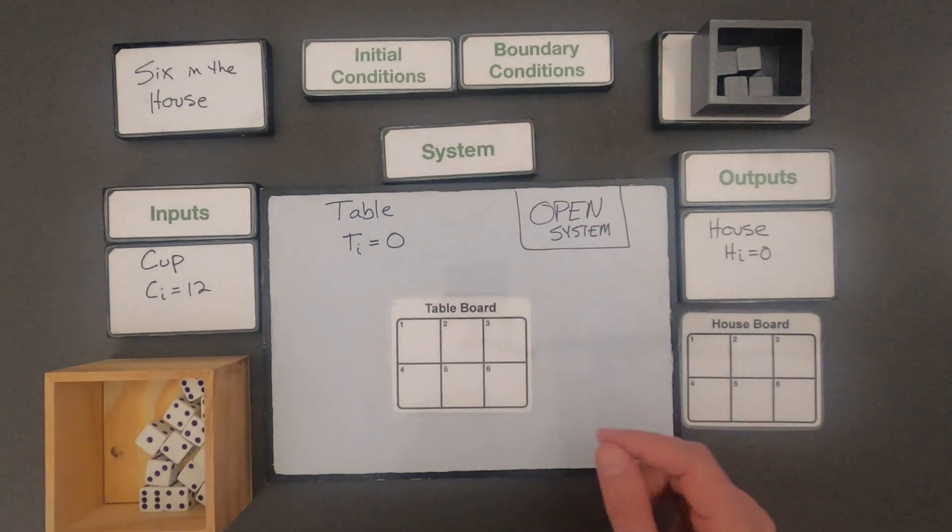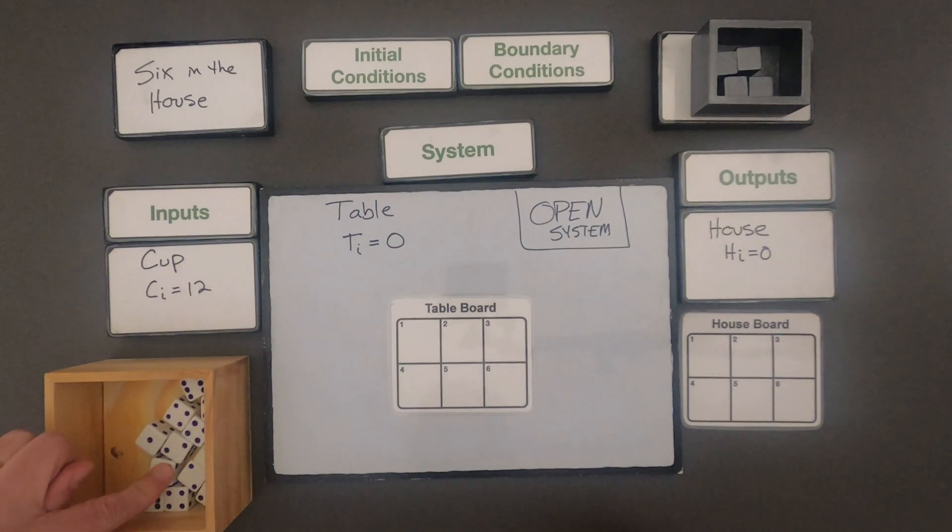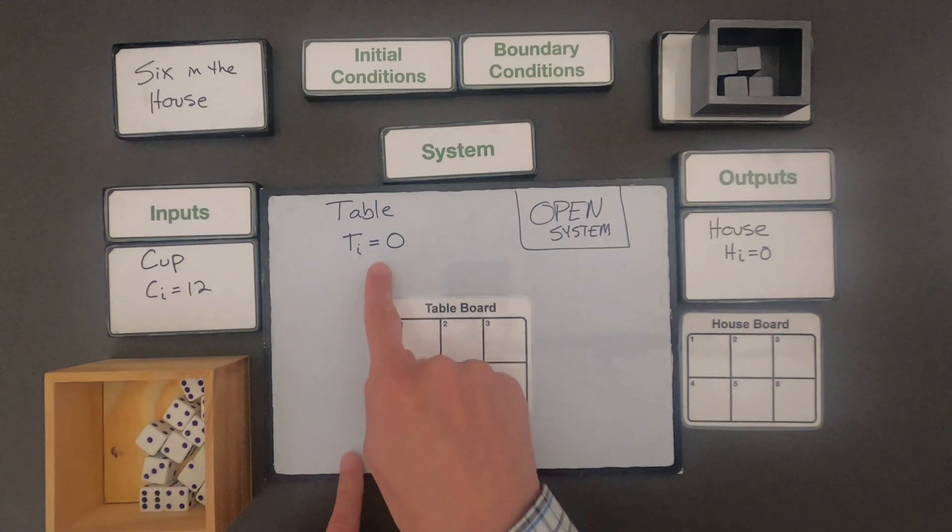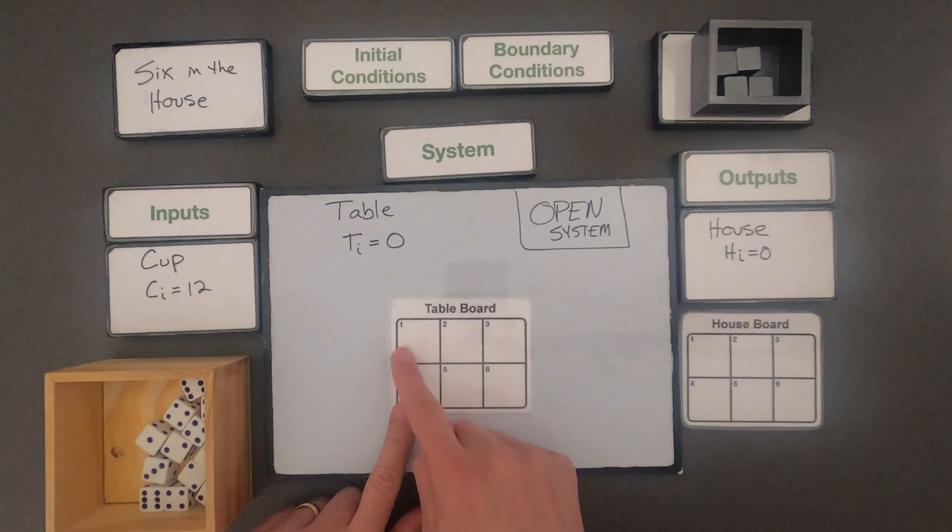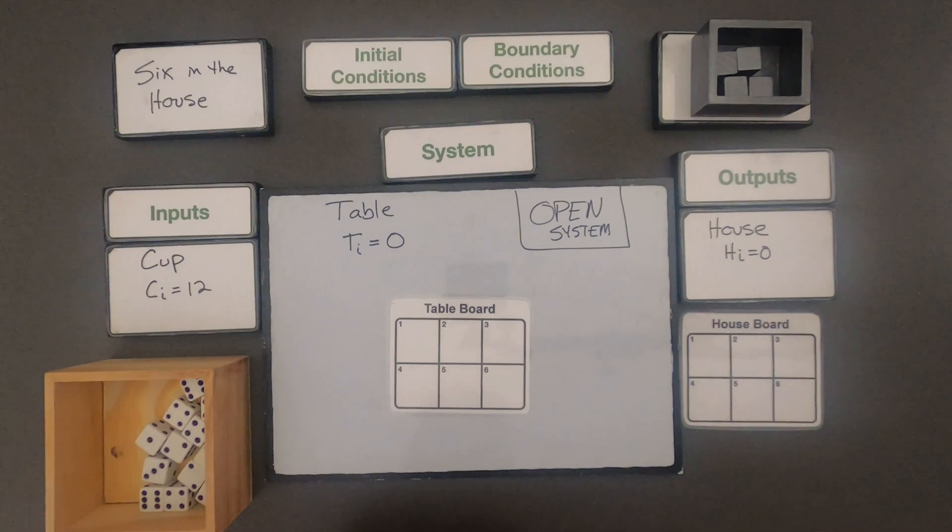And then the initial conditions are going to be the numbers. And so my initial conditions in the cup is going to be 12 dice since there are 12 dice in the cup. My initial conditions on the table would be 0. And then my initial conditions in the house would be 0 because there's no dice over here. Now this game would be really easy to win if your initial conditions were 6 and these were already filled up. But it wouldn't be much of a game. So let me play this game and then we'll see how our conditions change.